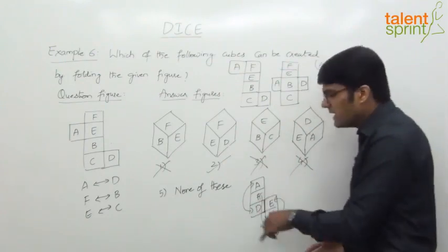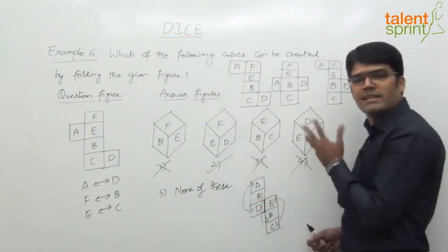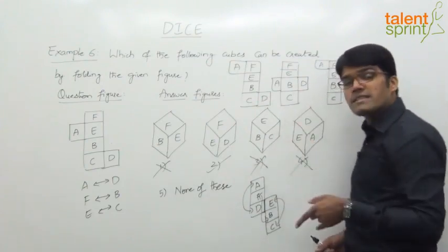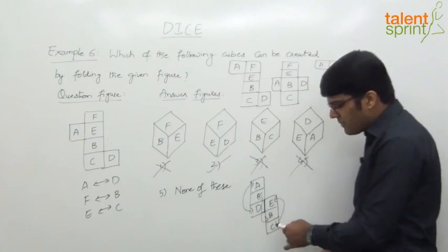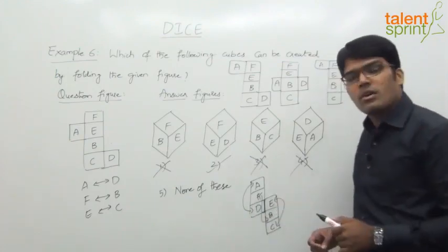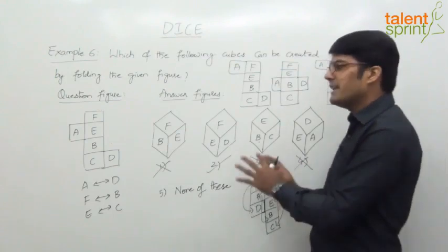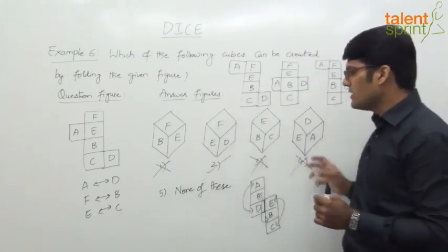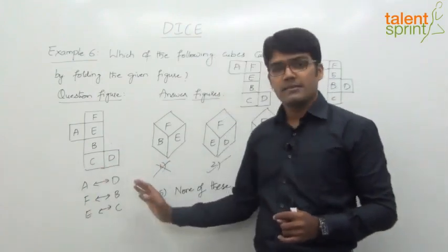That's it. This last form is only different from the first four in appearance, but the concept is the same: whatever is in a straight line, alternate ones are taken as opposite. Here A is opposite to D, E is opposite to C, and F is opposite to B.